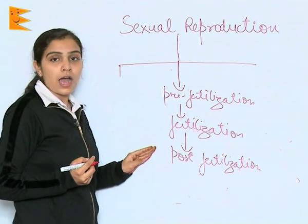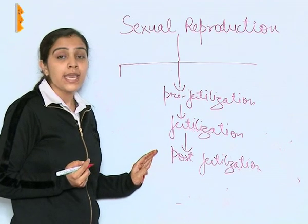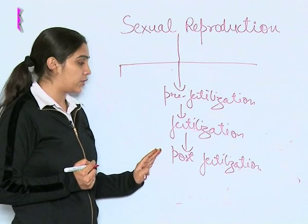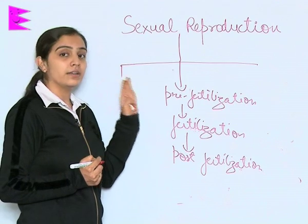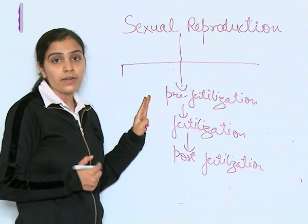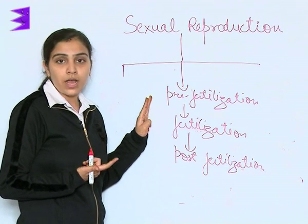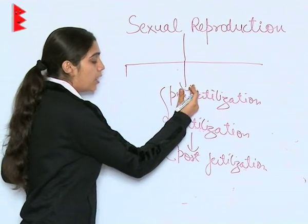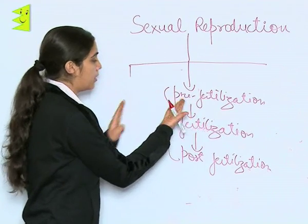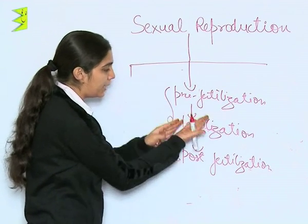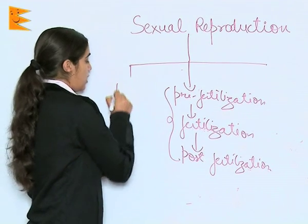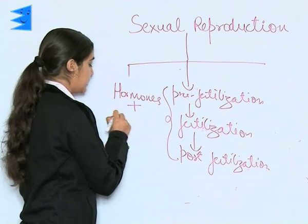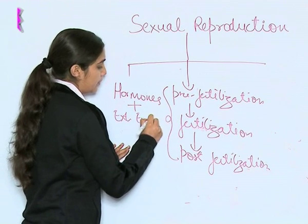All these phases are carried out with the help of hormones, and these phases are also supported by certain external environmental factors. As we studied, there are continuous breeders, seasonal breeders, annual flowers, and biennial flowers. So to complete the process of reproduction, these three phases occur with the help of hormones plus external environmental factors.